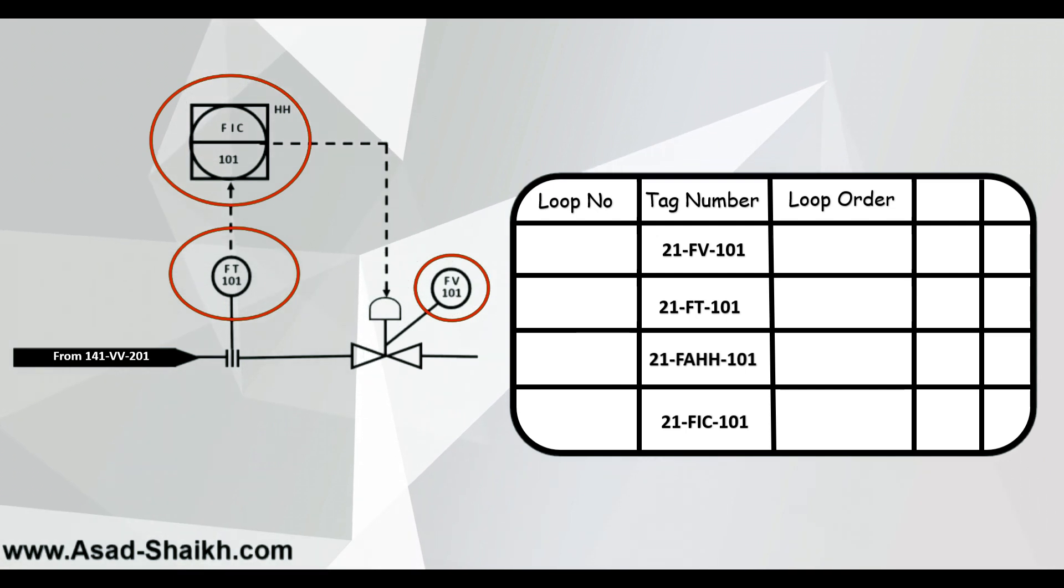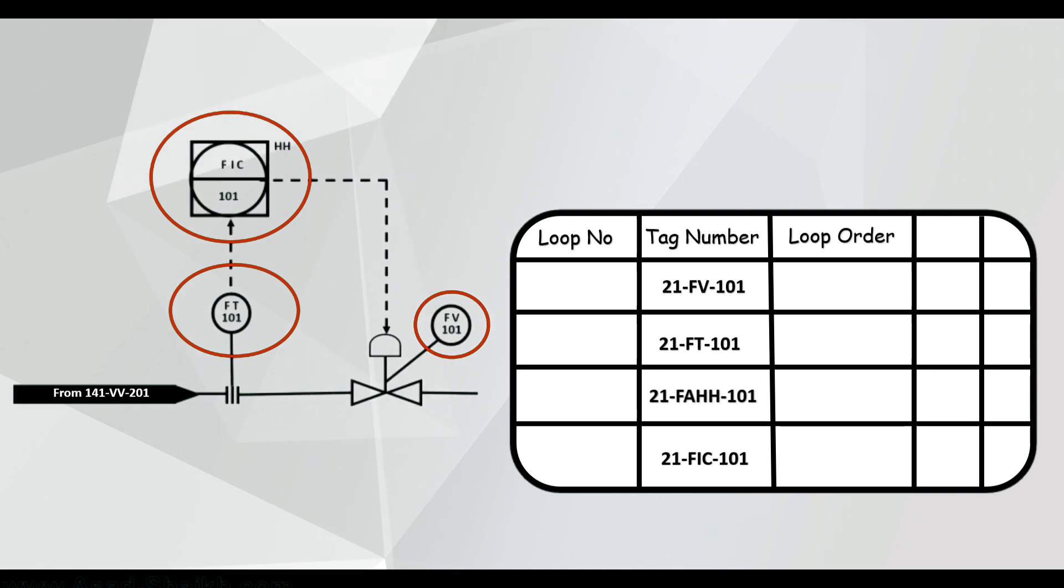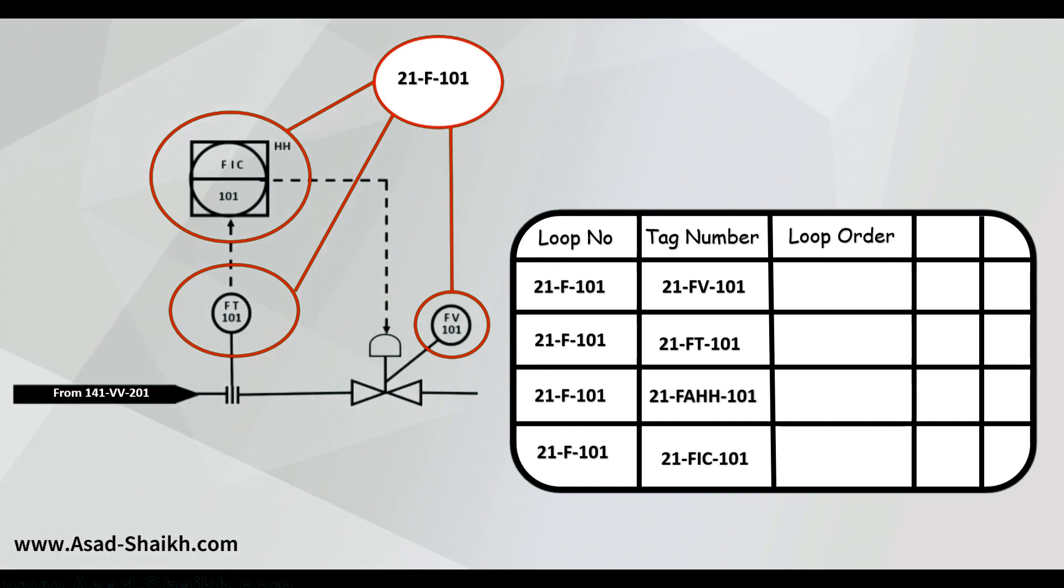These tags are not arranged in a haphazard fashion. These are connected to each other if you see. So they are part of one single loop. That is why loop number is so important. So the loop number is put after the tag number to understand that these tags belong to a particular loop. But if you see here our tag is first mentioned as a control valve then a transmitter then an alarm and then a controller.